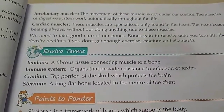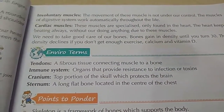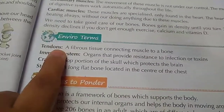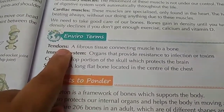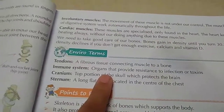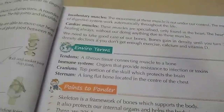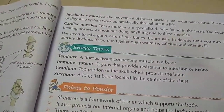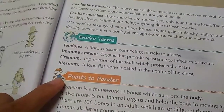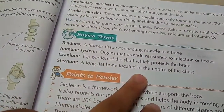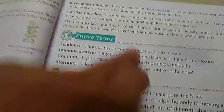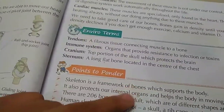We should take exercise, calcium, and vitamin D throughout life to keep our bones healthy. Now, sub-terminology: a tendon is a fibrous tissue that connects muscles to a bone. The immune system is the organ that provides resistance to infection or toxins. The cranium is the top portion of the skull which protects the brain. The sternum is a long flat bone in the center of the chest, to which 12 pairs of ribs are attached.